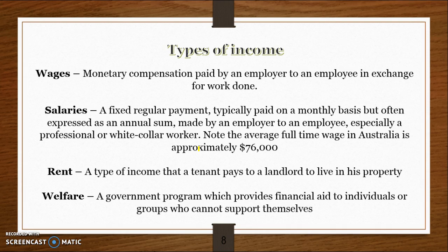Starting with a wage — a wage is monetary compensation paid by an employer to an employee in exchange for the work they do. Wages are generally paid on an hourly basis, so you might get paid $15, $20, or $30 per hour, and the more hours you work, the more you get paid. A salary, by contrast, is a fixed payment received on a monthly or annual basis — you don't generally get paid more for overtime if you're on a salary, whereas you would on a wage. Both come from labour.